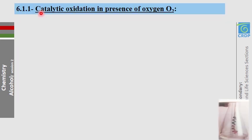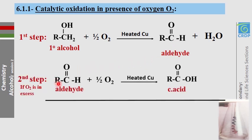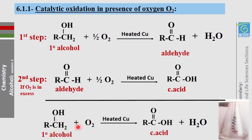The first reaction is catalytic oxidation in the presence of oxygen. Primary alcohols, in the presence of oxygen and heated copper metal, undergo the reaction to give aldehyde and H₂O. This aldehyde can continue oxidation, taking one more oxygen atom to give carboxylic acid if oxygen is in excess. So overall, primary alcohols in the presence of enough oxygen can give carboxylic acids.